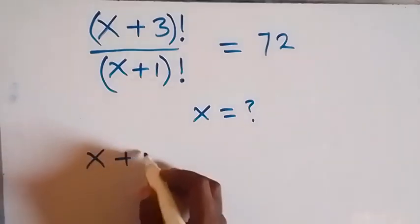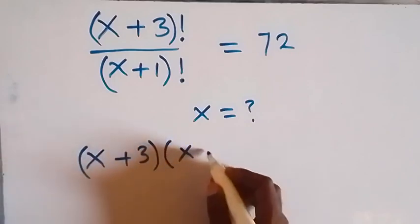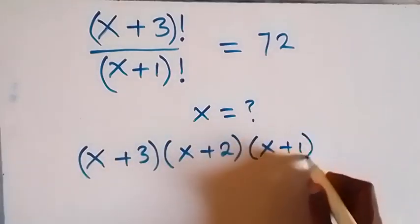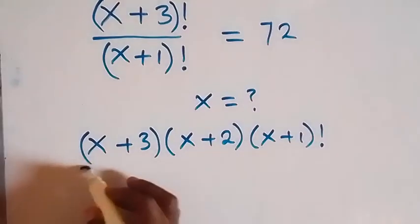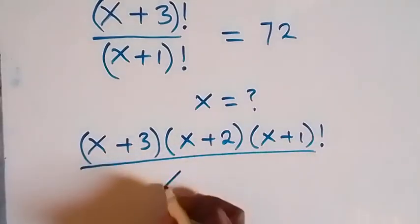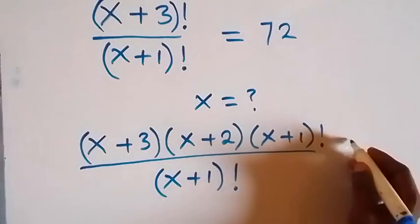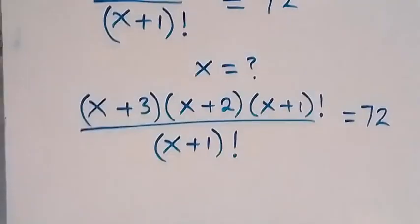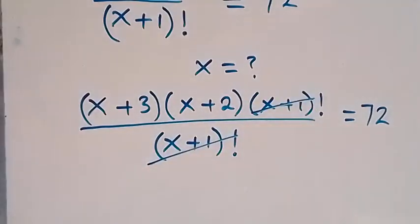as x plus three times x plus two times x plus one factorial, divided by x plus one factorial, equals 72. Here we have x plus one factorial; they cancel each other. What we have will be x plus three